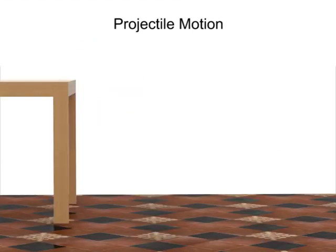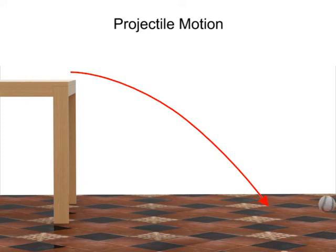To better understand the nature of projectile motion, consider a ball rolling off a table. Notice that as the ball leaves the table and falls through the air, its path follows a downward arc.